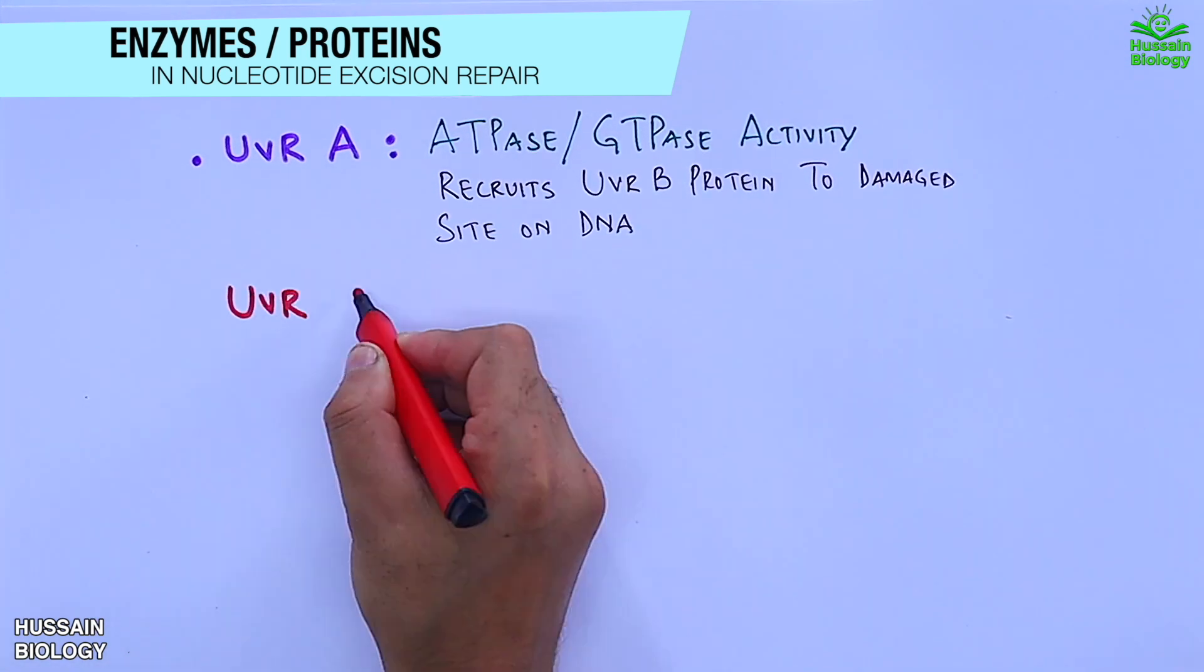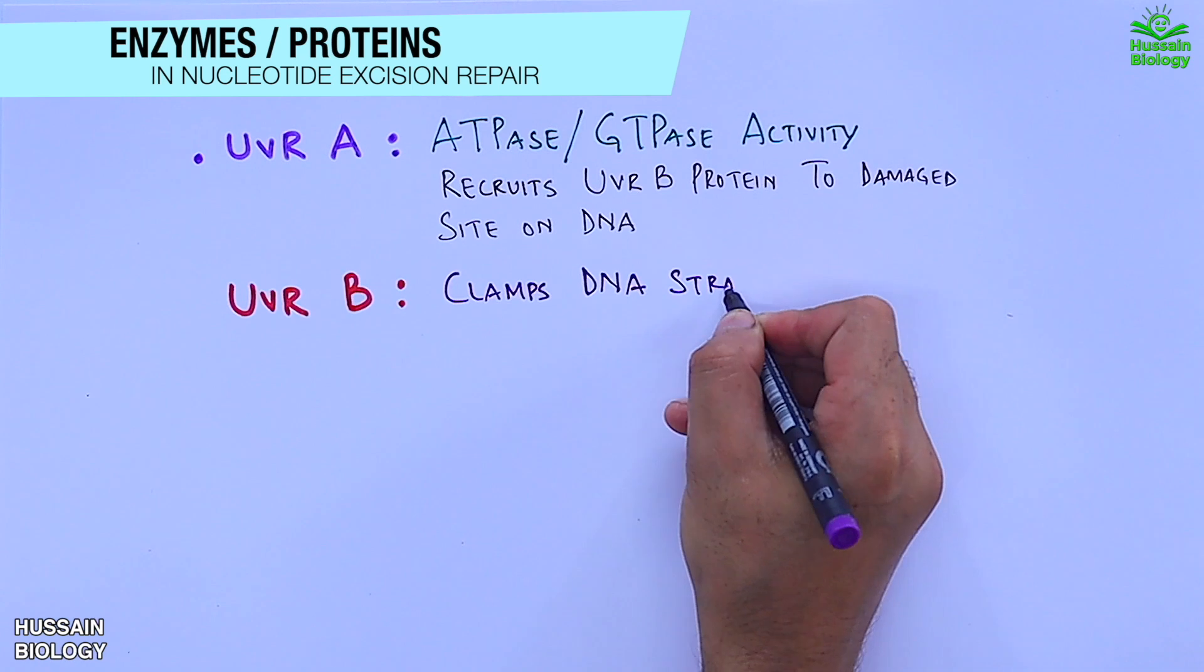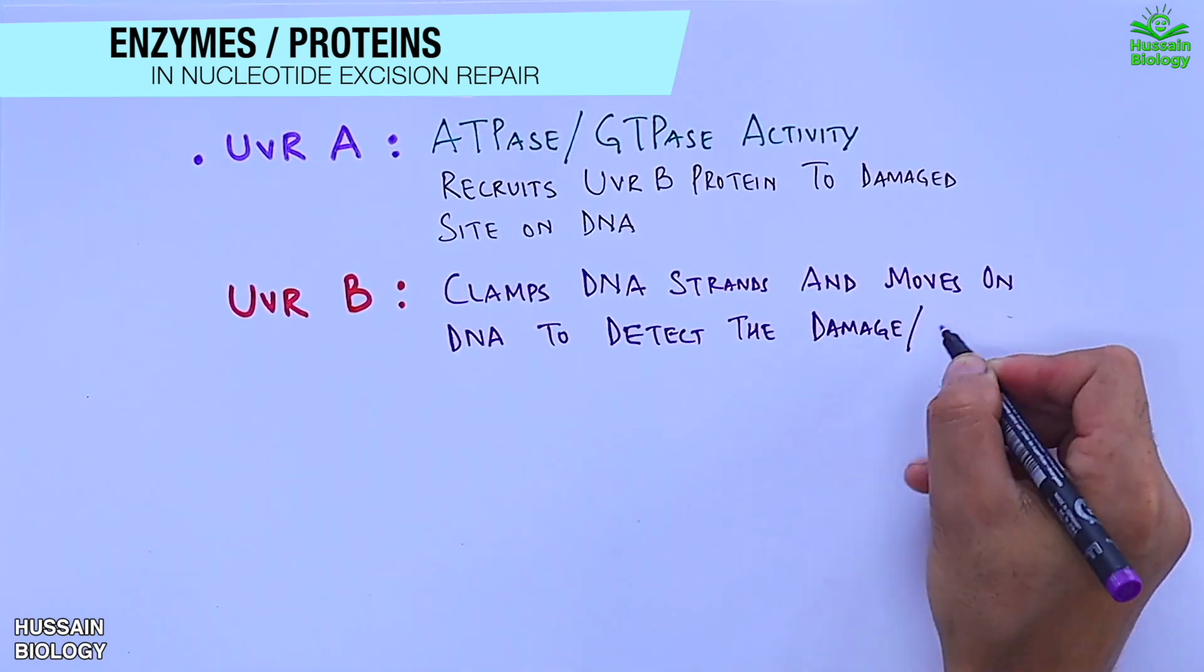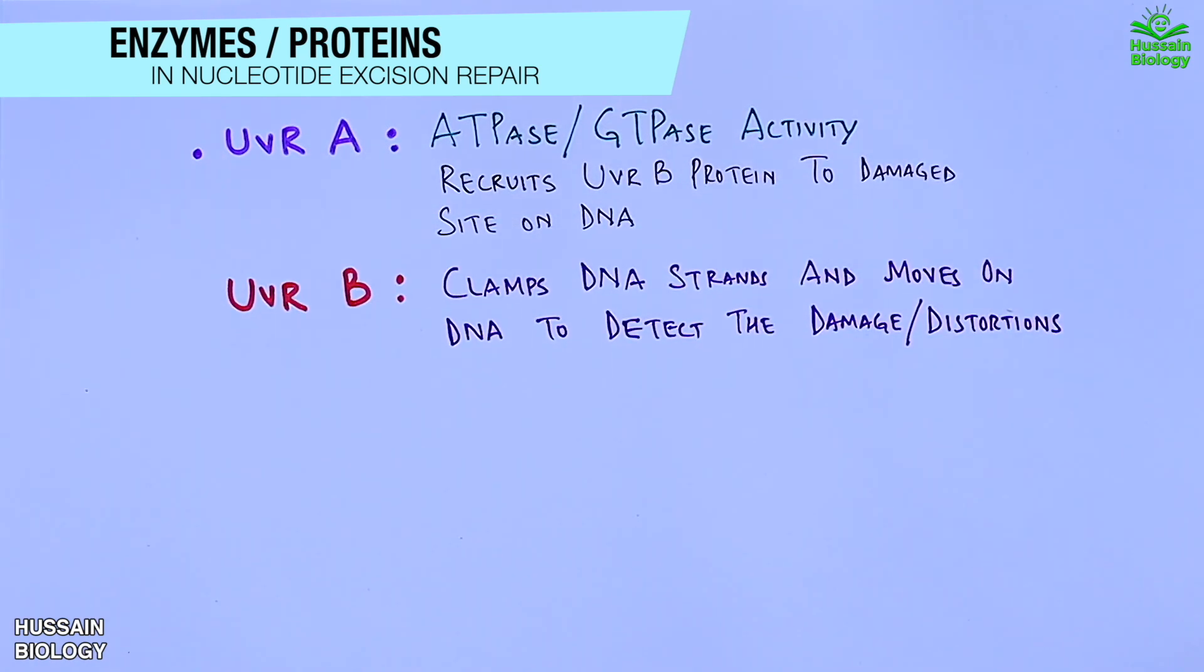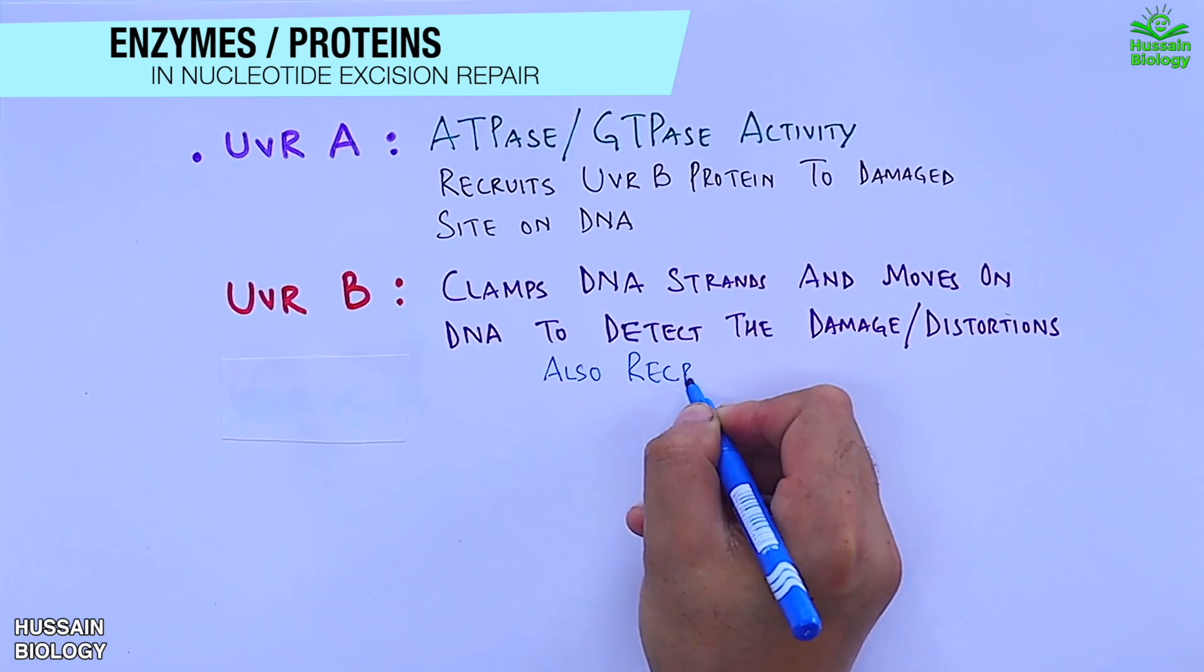Second is the UVR B. It clamps DNA strand and moves on the DNA strand to detect the damage or distortion. This UVR B also recruits the UVR C.